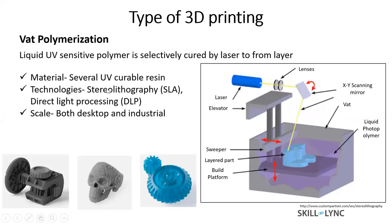In terms of material, you have different UV-curable resins used for this particular printing. By changing the chemical composition of these polymers, you can get different properties. You have flexible resin, high-temperature resin with temperature resistance up to 200 degrees Celsius, castable resin, and high-detail resin which can print with a detail of about 0.3 to 0.4 mm. These are some examples of vat polymerization printing.